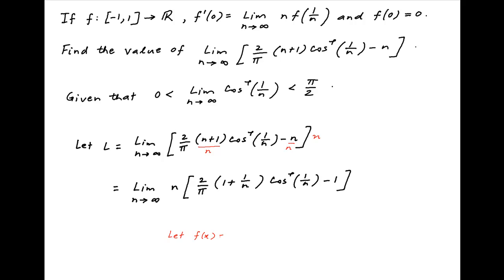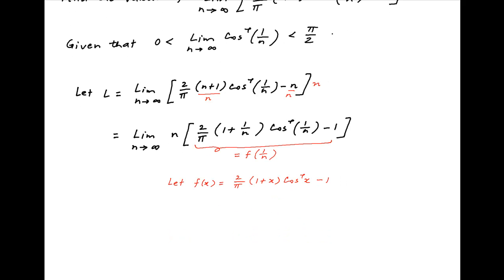Now let's define a function f(x) which is equal to 2 upon pi times 1 plus x times cos inverse x, minus 1. Therefore, the expression in the square brackets in the above limit is equal to f of 1 upon n. Therefore, the limit L is equal to the limit as n tends to infinity of n times f of 1 upon n.